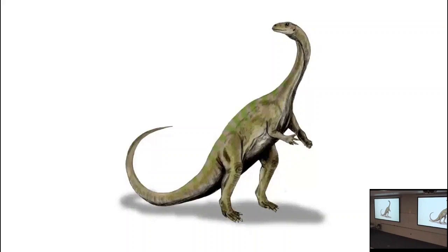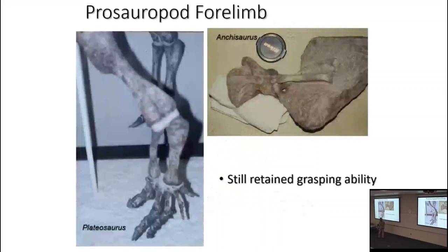Being big animals walking on their hind legs gives them the easy ability to rear up — all they have to do is pivot a little, and there they are, high up in the trees, where their only competition is animals smaller than their own head. That's probably part of their success.